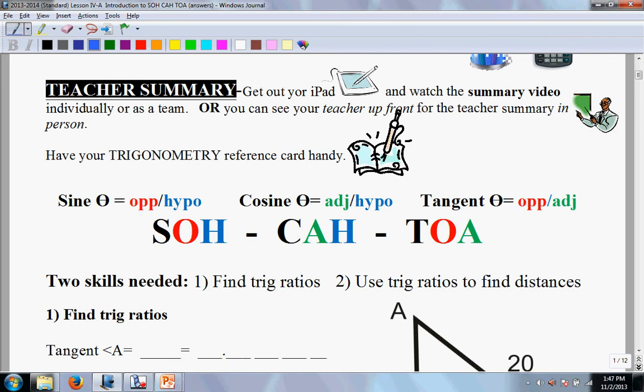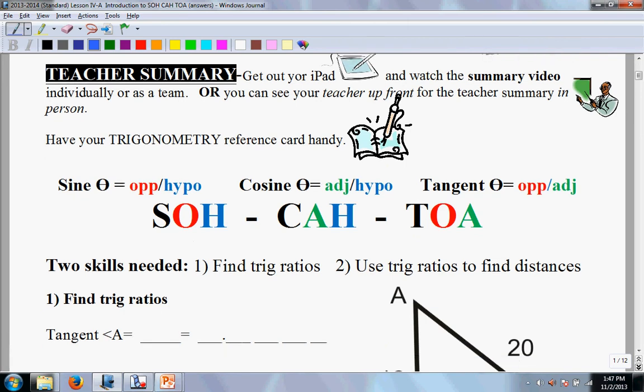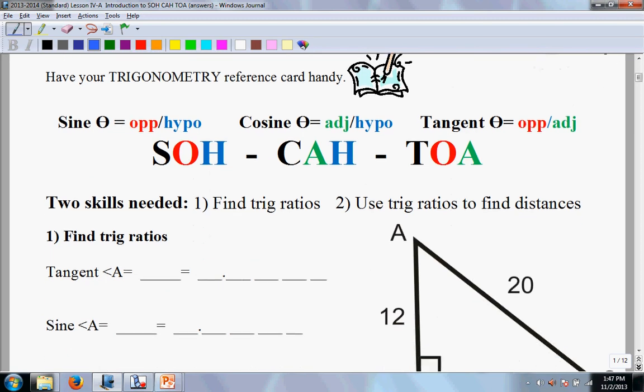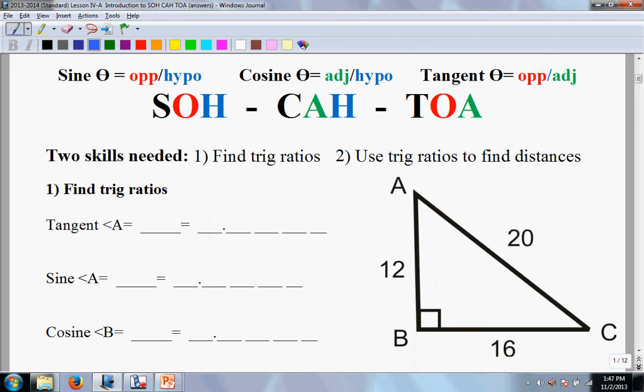As you learned in your preview notes, SOH CAH TOA are simply ratios of sides and angles that are unique to right triangles. Keep this acronym in mind, SOH CAH TOA.